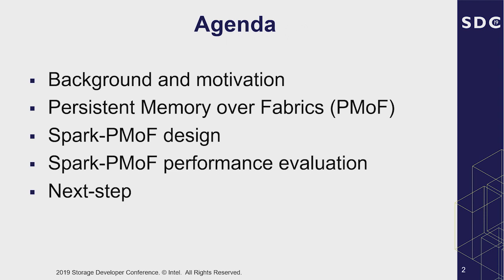Here is the agenda. First, I will introduce the background and motivation — why we want to optimize Spark shuffle performance, since Spark shuffle is a critical phase in Spark. Second, we will give a brief introduction to what persistent memory over fabric is. Third, I will introduce the Spark PMOF design and show how we use persistent memory and RDMA to accelerate Spark shuffle performance. Next is performance evaluation, where we will show how we accelerate Spark shuffle performance up to 20 times. Finally, we will introduce the summary and next steps.